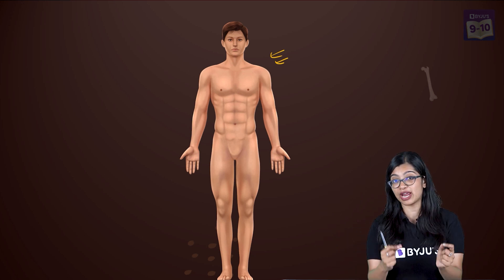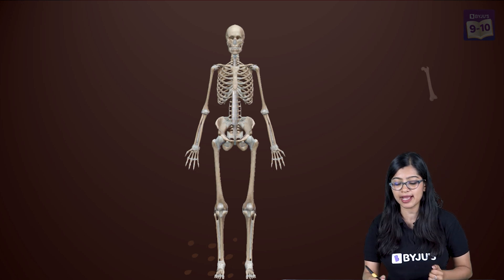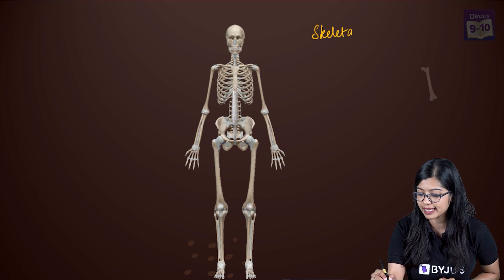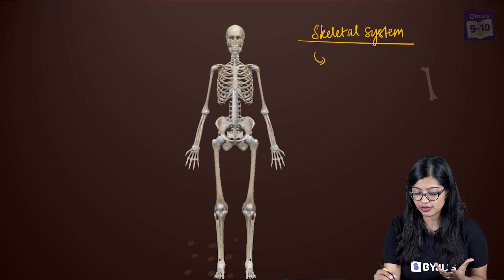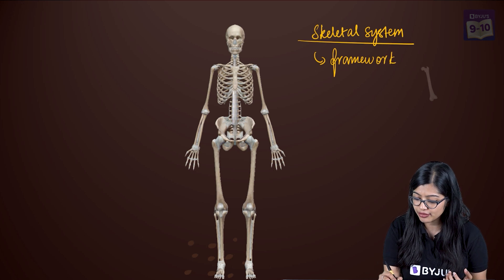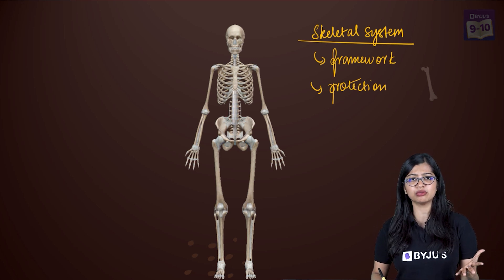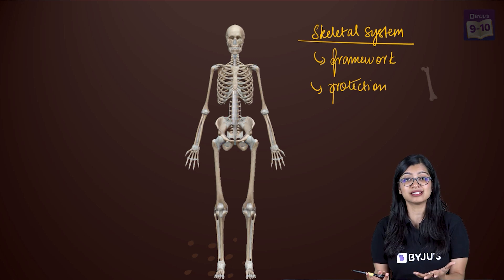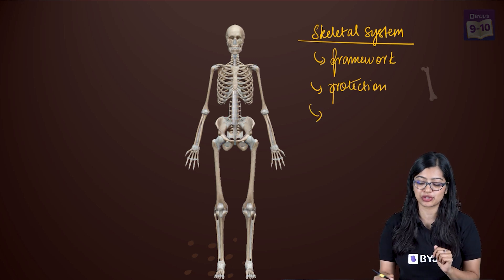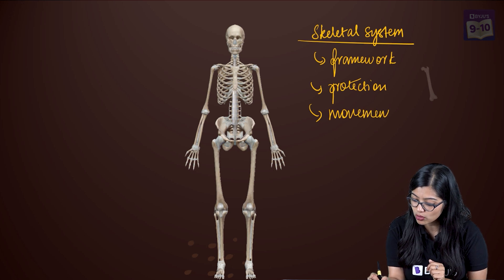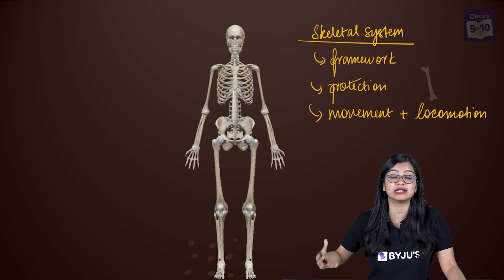What actually provides the framework for our body are the bones. Bones are a kind of connective tissue and all these bones come together to form the skeletal system. The skeletal system has various important roles — it provides framework and protection to our body. Now you might be thinking: we came here for muscular tissue but you're talking about the skeletal system. The reason is that the skeletal system also helps with movement and locomotion.